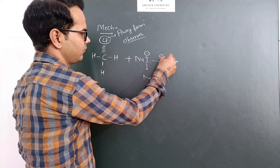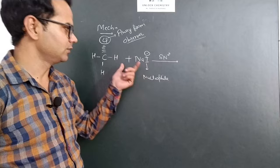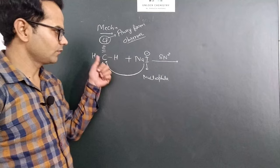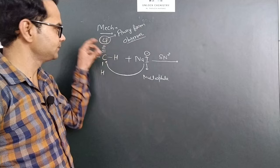The reaction follows SN2 mechanism. In SN2 mechanism, inversion of configuration takes place. So this nucleophile will attack from this side, from the front direction, or we can say opposite direction of this leaving group.